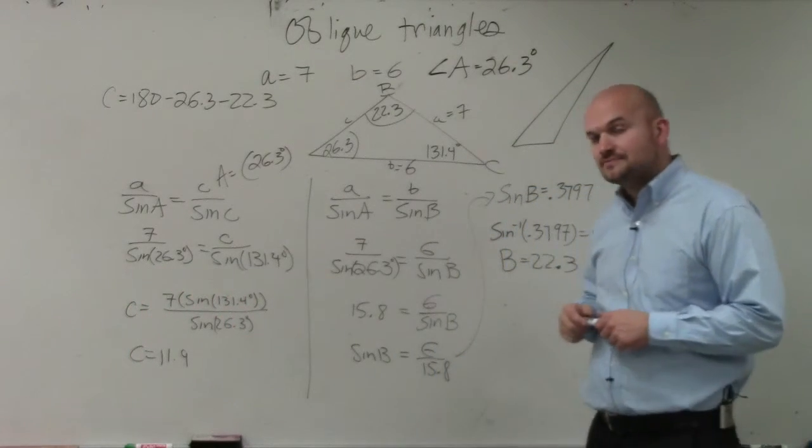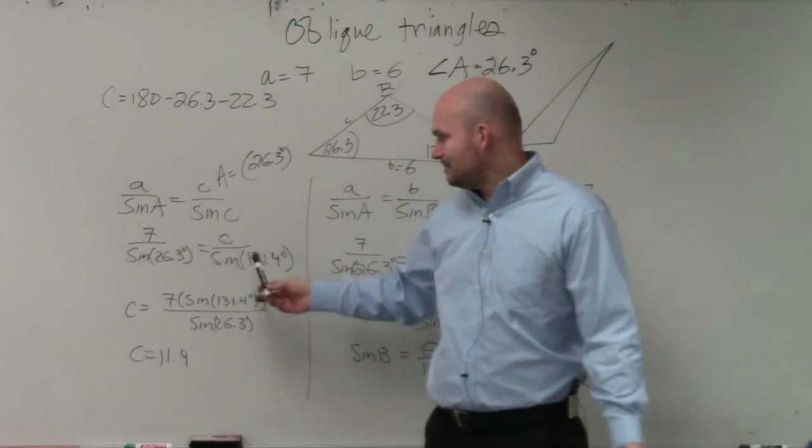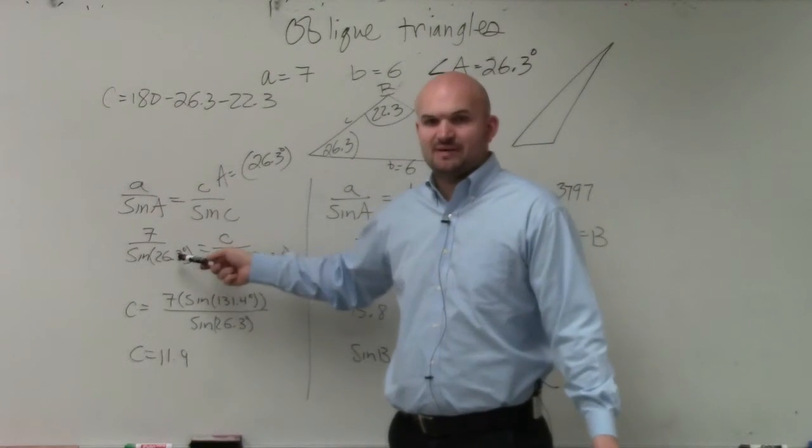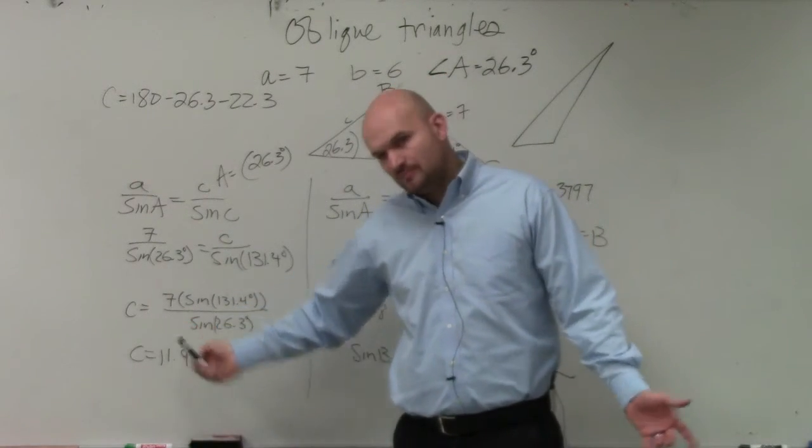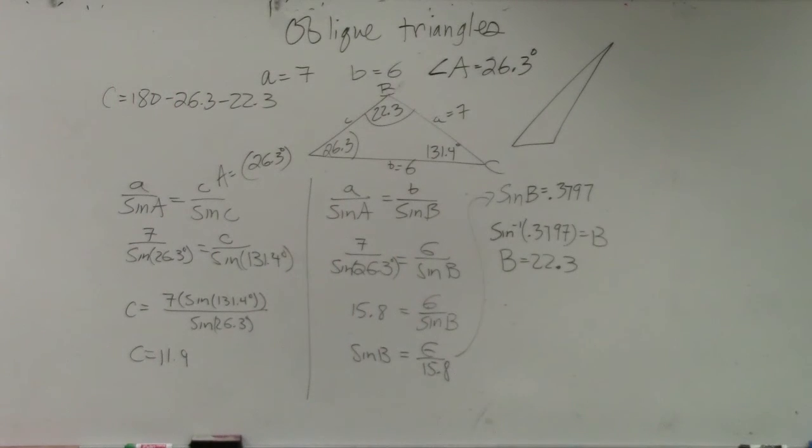So instead of cross-multiplied, what was the order you did? I just cross-multiplied. I did this cross-multiplied, I just did it in my head. I did this times this, and that times that. Well, to solve for C, then you have to divide by sine of 26.3 on both sides, right? So I'm just trying to skip some steps a little bit. OK.